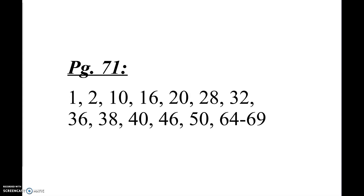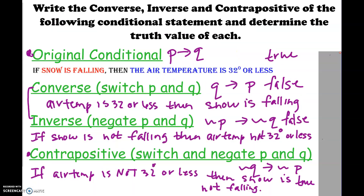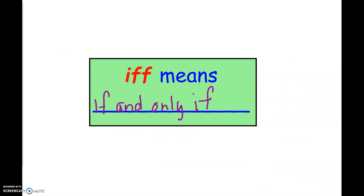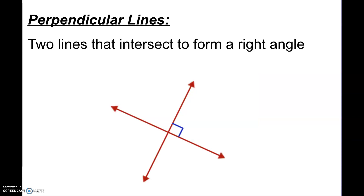At the end here, we practiced writing all of our different terms and talked about truth values — the original and contrapositive being the same. Then we talked about biconditionals, the if and only if, and that a biconditional means it is a definition. You should be ready now to do your online 2-1 homework — go to Big Ideas and get started on 2-1.